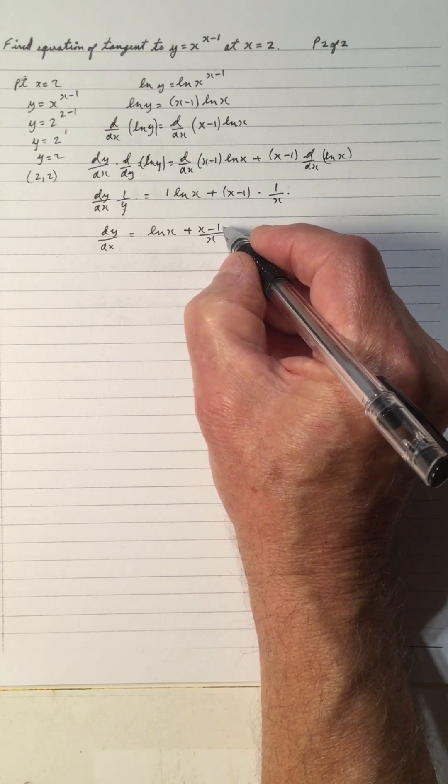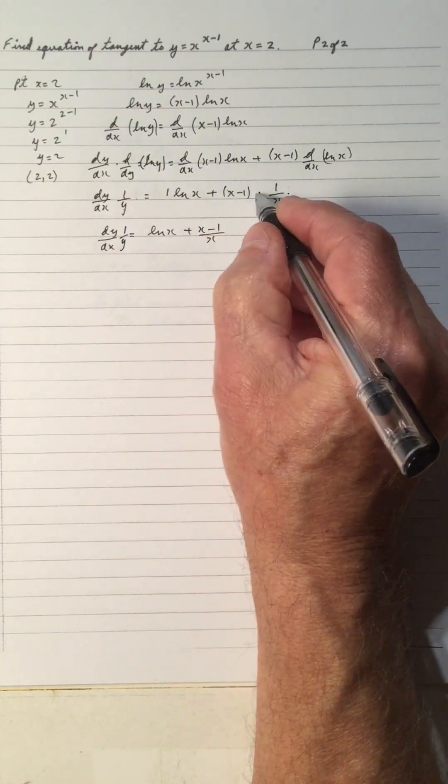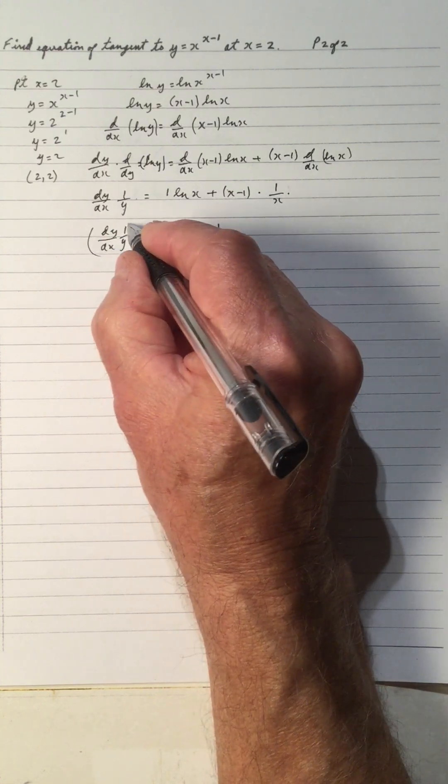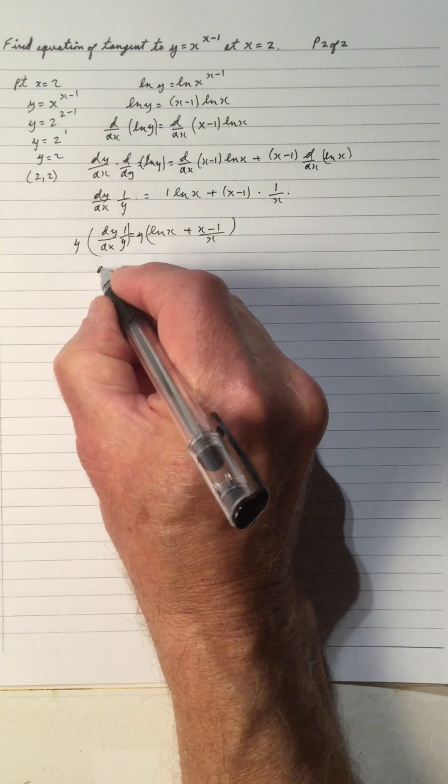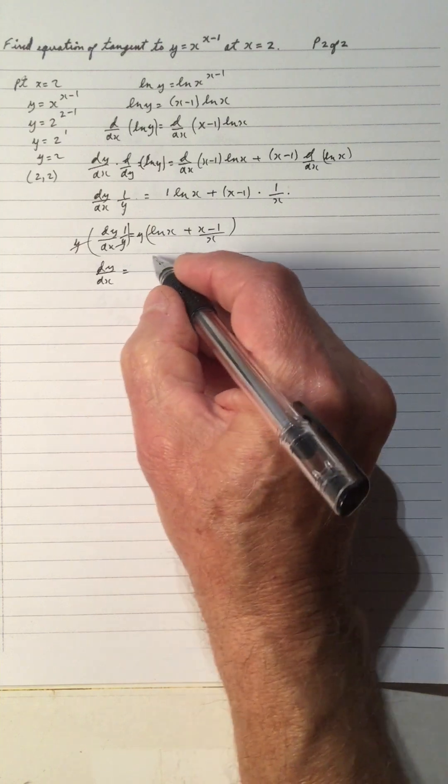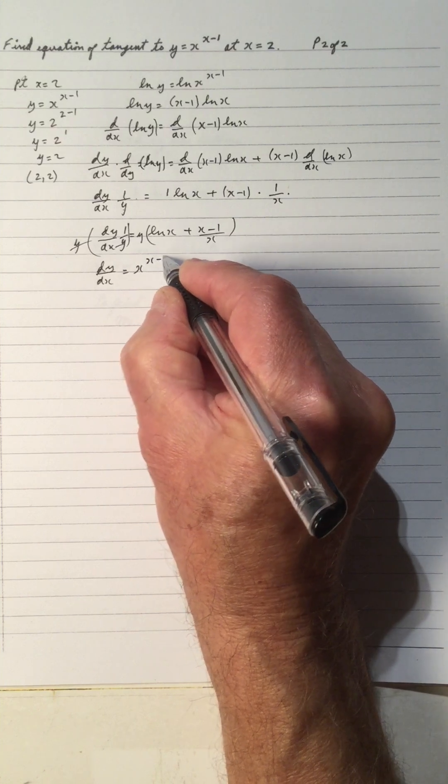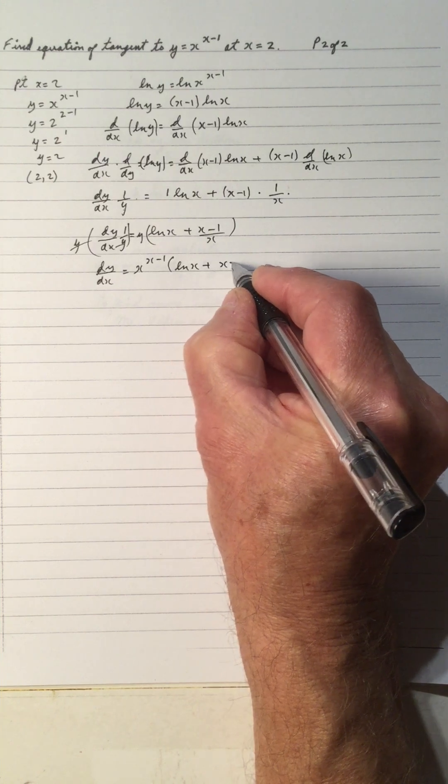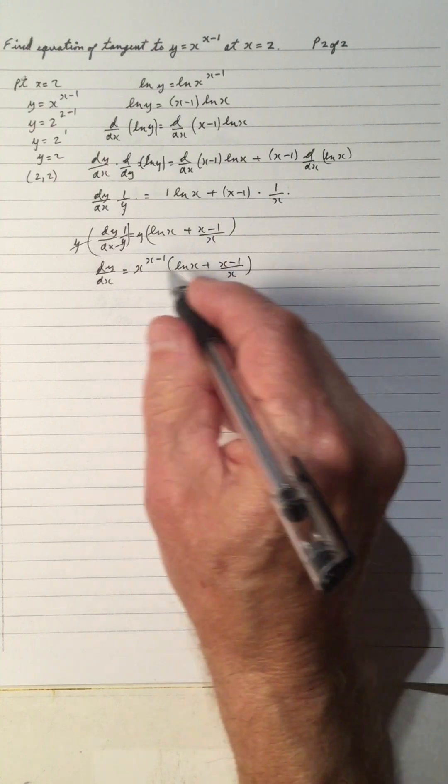Now we have, oops, I forgot the 1 over y here. I was simplifying this side and forgot to put the 1 over y in. So we want to move the y, so we multiply both sides by y. So that gives us dy dx, the y's cancel. And y is x raised to the x minus 1 times ln x plus x minus 1 over x. So that's the derivative.